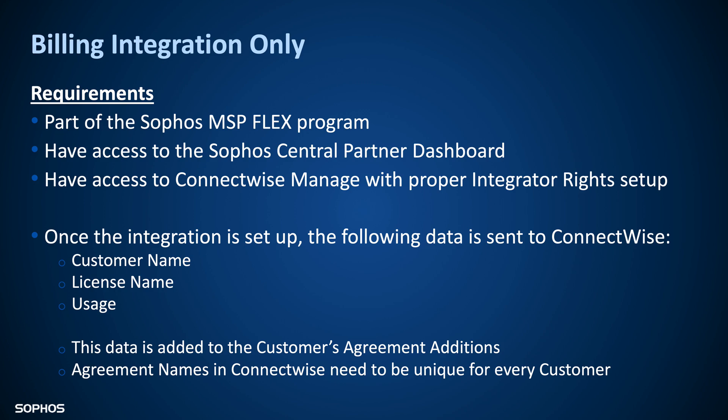Once that integration is set up, the following data is going to be sent over to ConnectWise: the customer name, the license name for the product, and the usage for that particular product. This data is going to be added to the customer's agreement additions — the addition tab inside of that customer's agreement. One of the criteria is that the agreement name inside of ConnectWise has to be unique for each and every customer. So let's go ahead and take a look at how this setup is done inside of Sophos Central and inside of ConnectWise Manage.